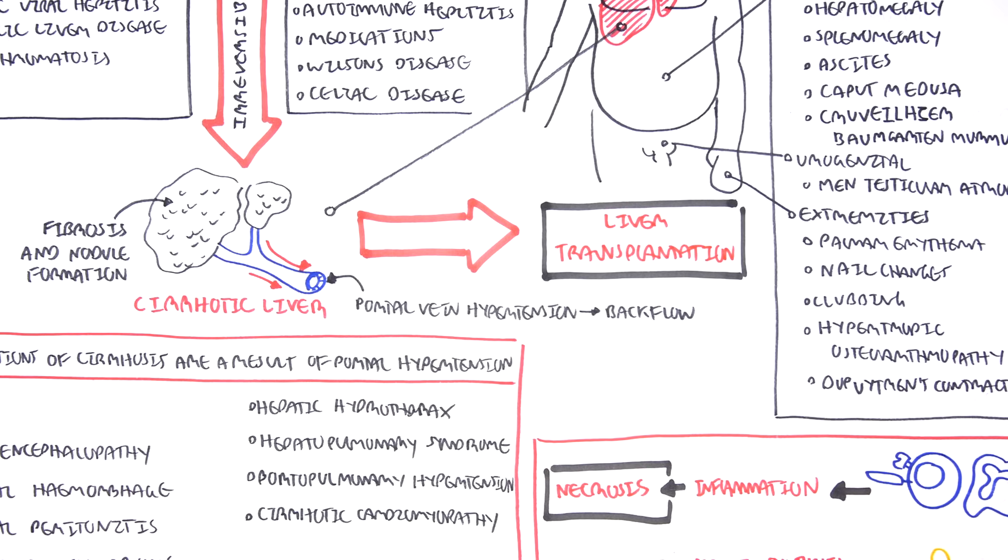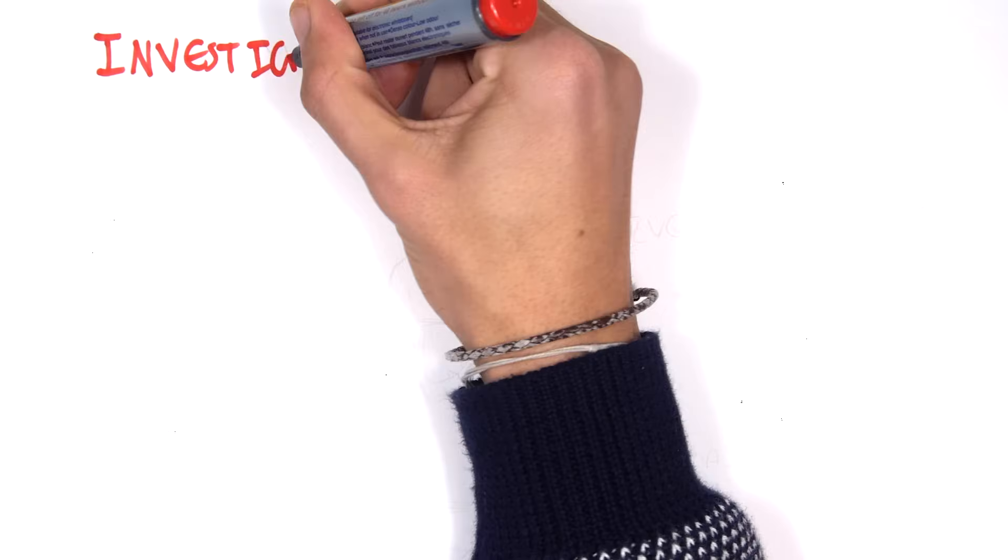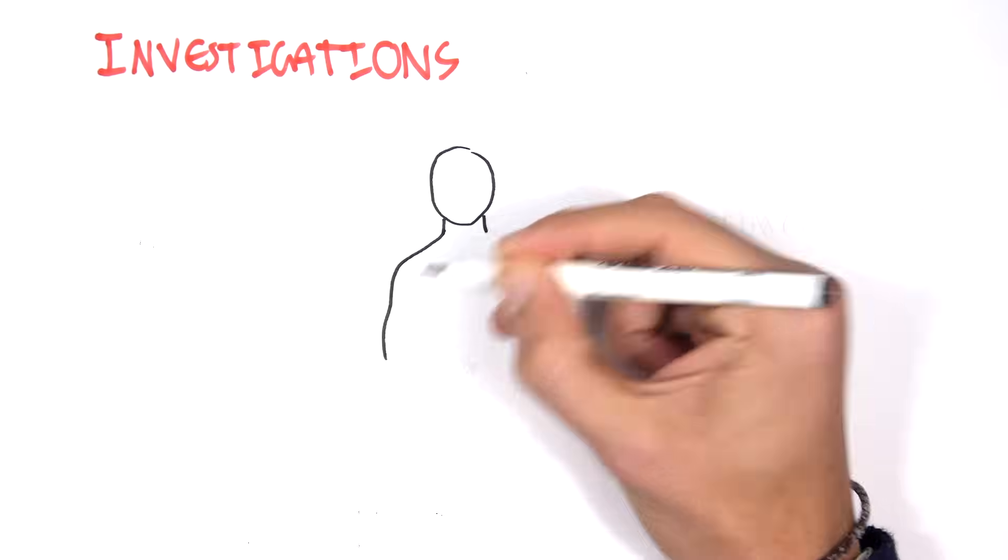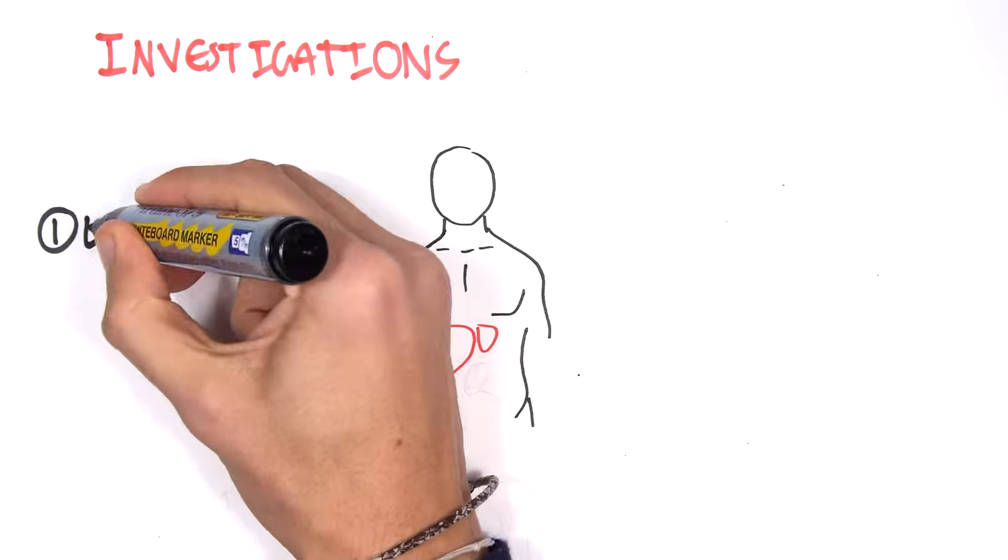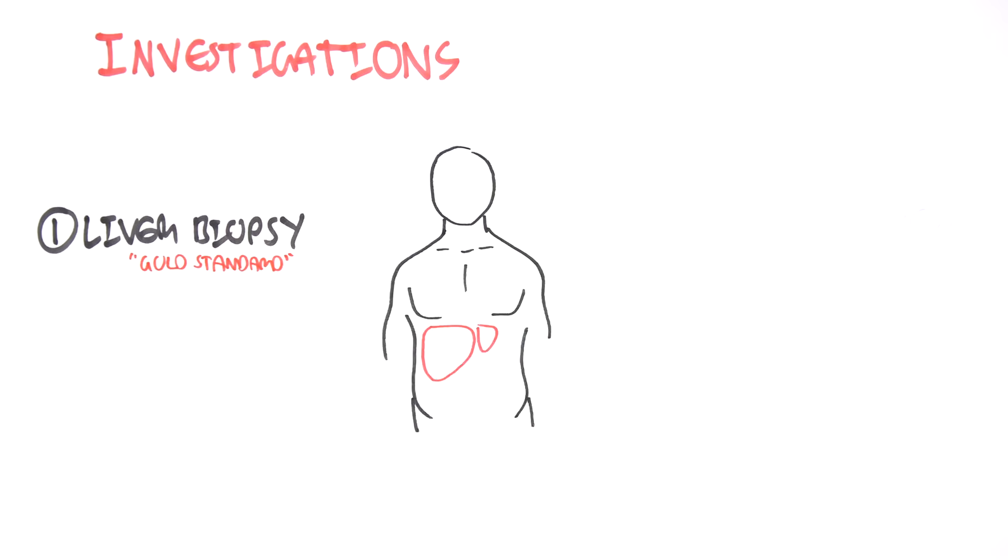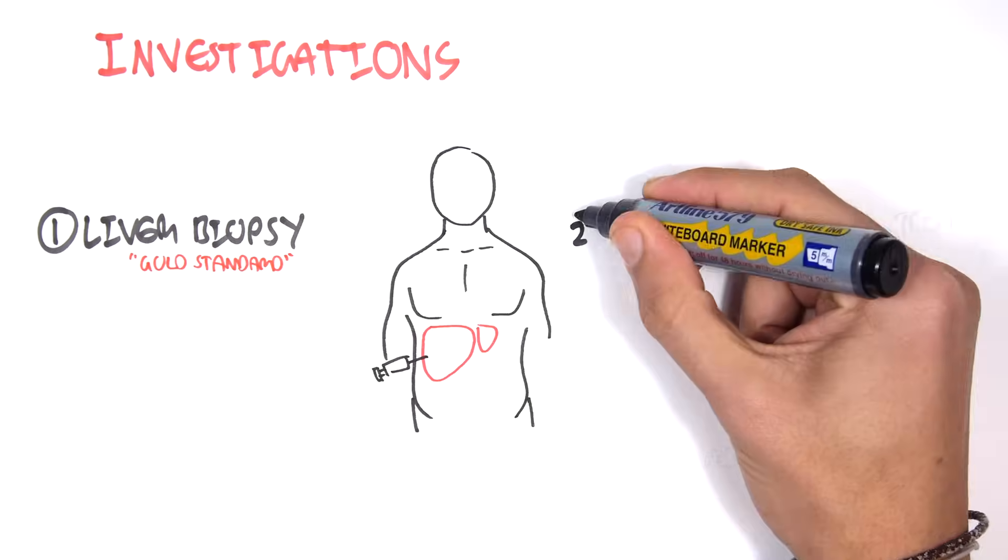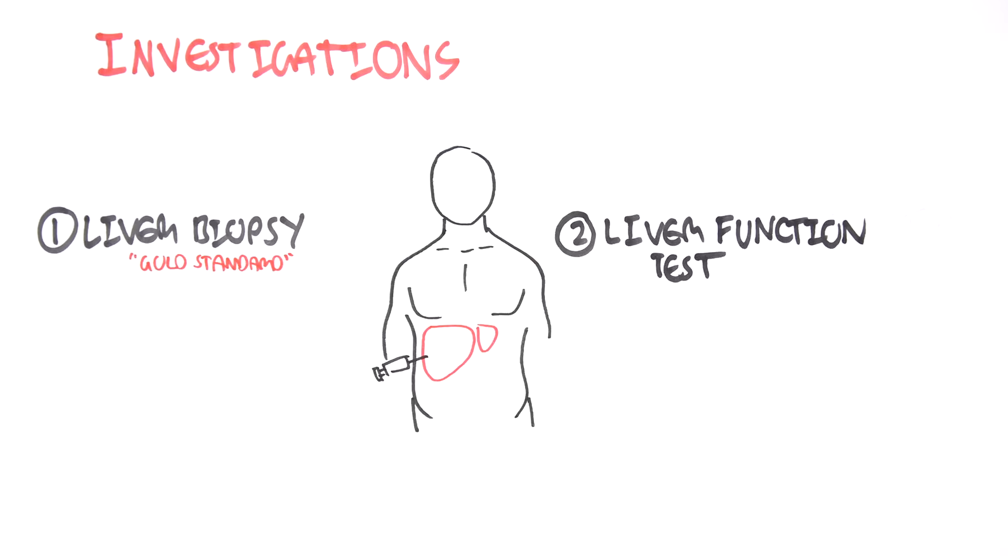Next, let's look at investigations of a person suspected with liver disease. Liver biopsy is the gold standard, taking a sample of the liver. Number two, you can perform a liver function test, including ALT, AST, albumin, bilirubin. Number three, you can perform an ultrasound.